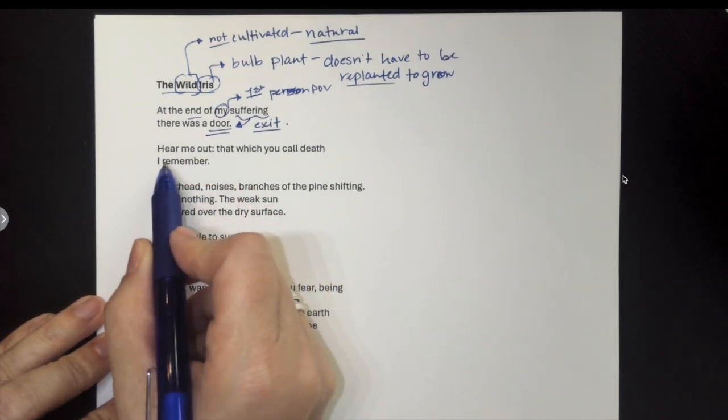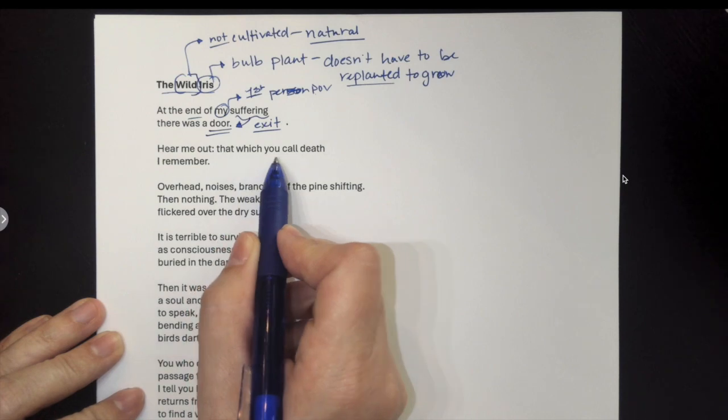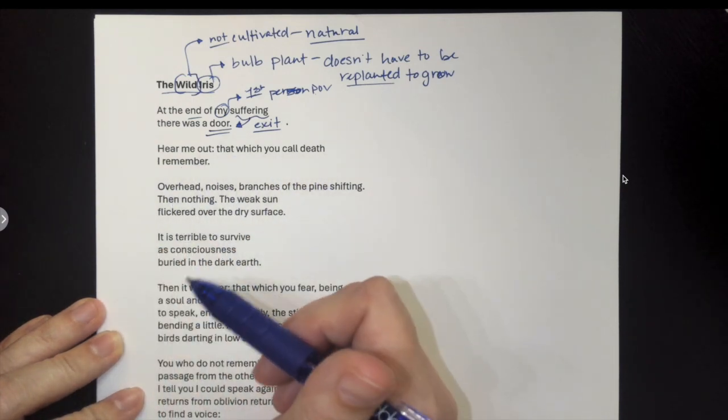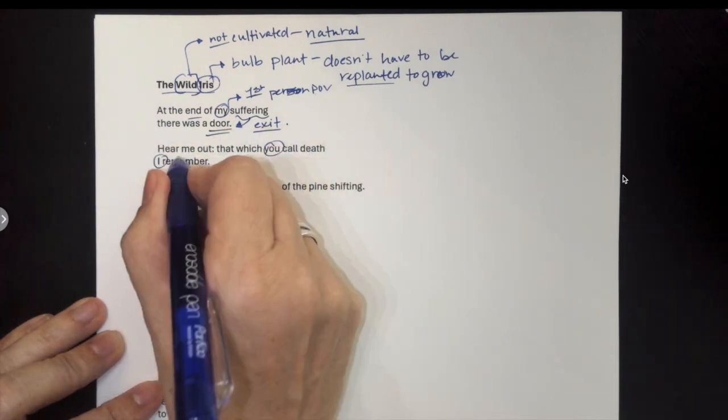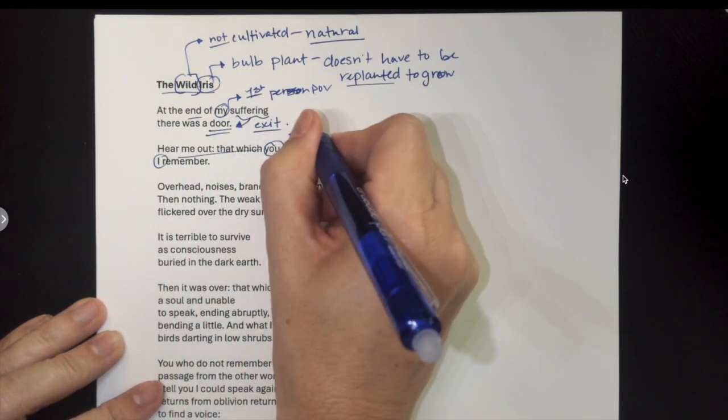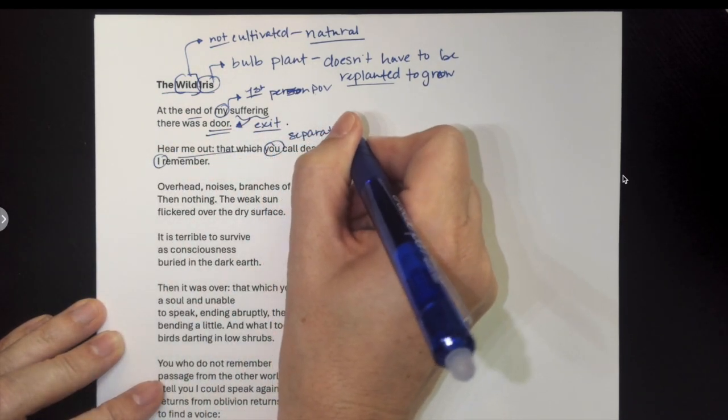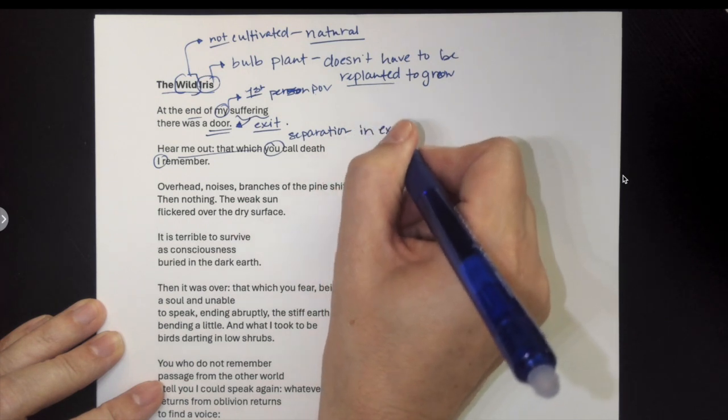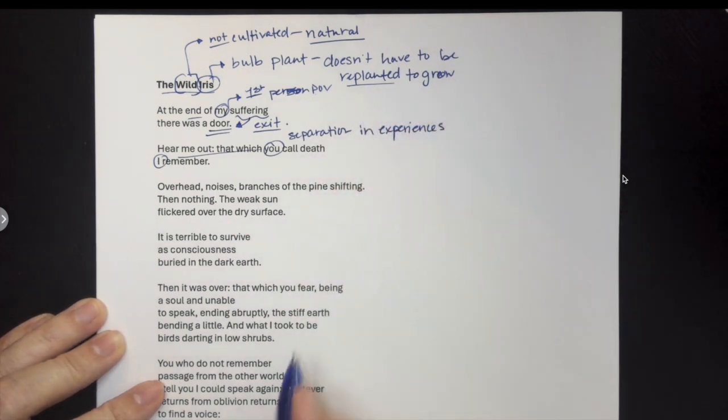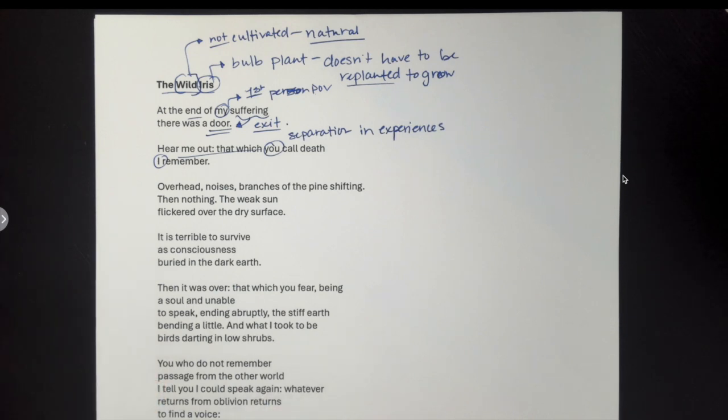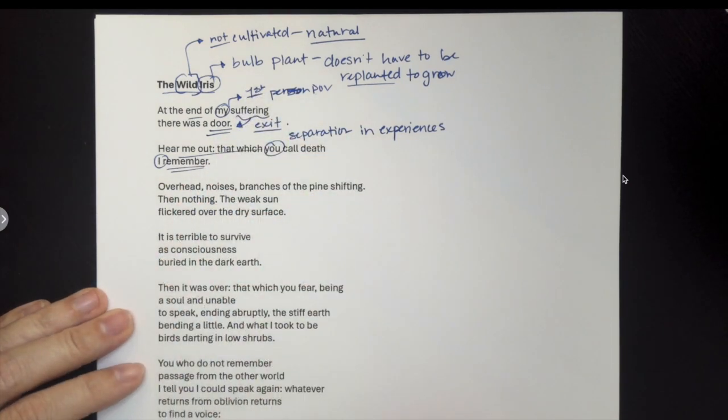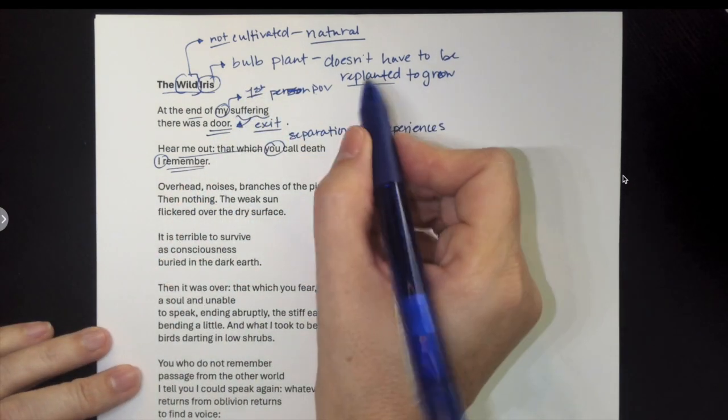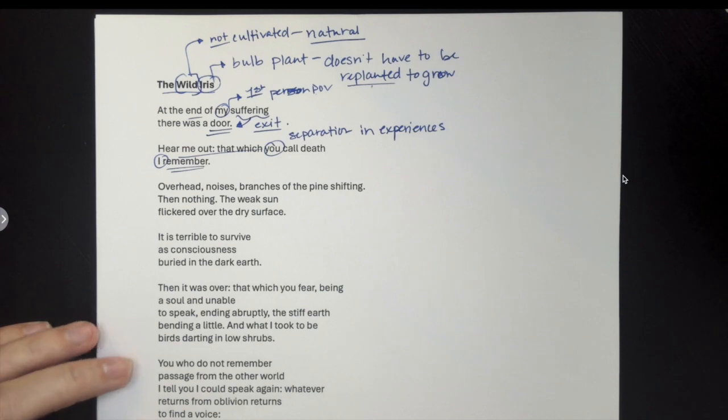Our speaker then goes on to say, hear me out that which you call death, I remember. So the speaker is telling us and emphasizing to us this separation in their experiences. Because obviously that's something that we as humans are not going to remember. We are not going to remember death. Our speaker, our iris says, I do remember it. That's because of this idea of regrowth.